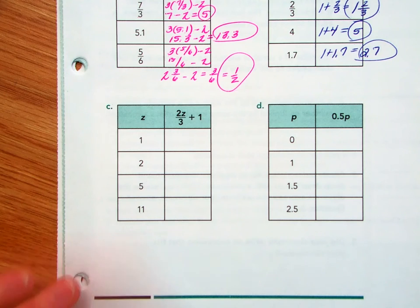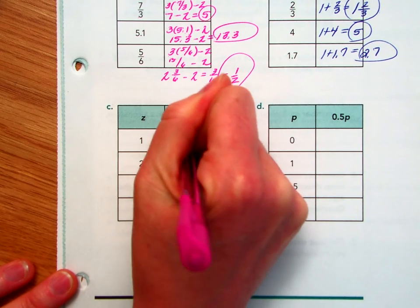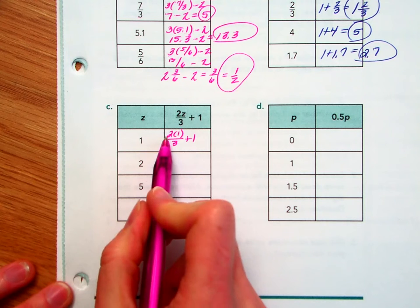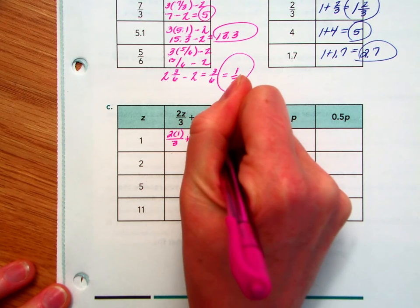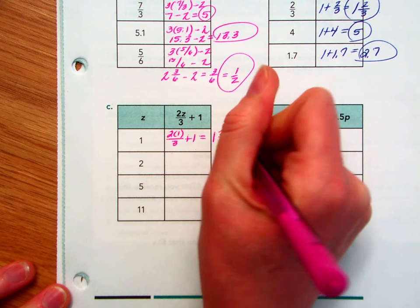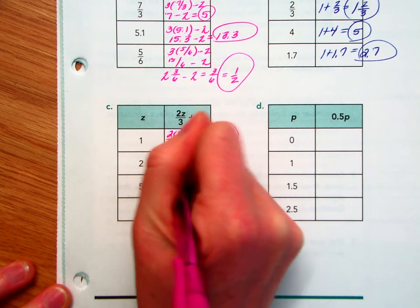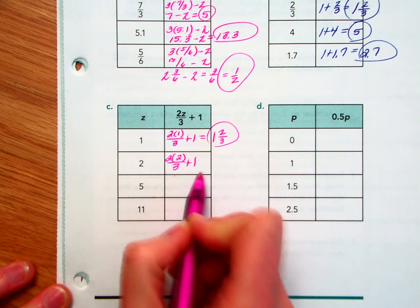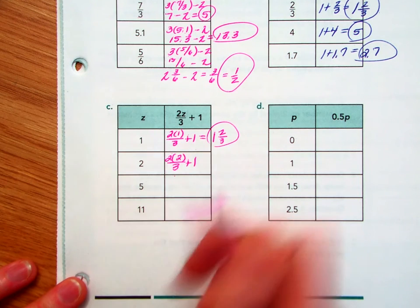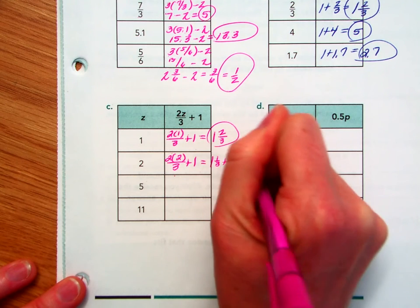This one has a lot of steps going on. So you've got 2 times 1 divided by 3 plus 1. So you've got 2 thirds plus 1. That's going to equal 1 and 2 thirds. Now you've got 2 times 2 over 3 plus 1. That's 4 thirds plus 1. 4 thirds plus 1 is 1 and 1 third plus 1, which is 2 and 1 third.